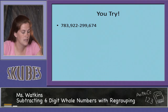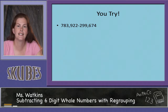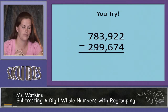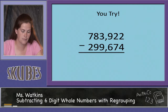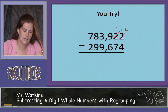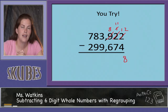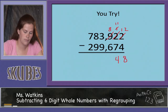Let's try another one: 783,922 minus 299,674. Here they are already stacked. Starting in our ones column, we know we need to regroup: this 2 becomes a 1 and this 2 becomes a 12. 12 minus 4 equals 8. Let's regroup again: this 9 becomes an 8 and this 1 becomes an 11. 11 minus 7 equals 4, and 8 minus 6 equals 2.